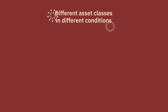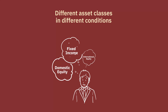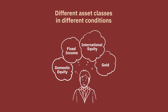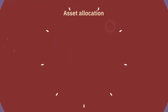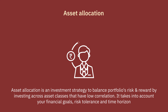In investing, markets favor different asset classes in different economic conditions. Hence, you need the right asset allocation strategy to create wealth in the long run. Asset allocation is an investment strategy to balance a portfolio's risk and reward by investing across asset classes that have low correlation.